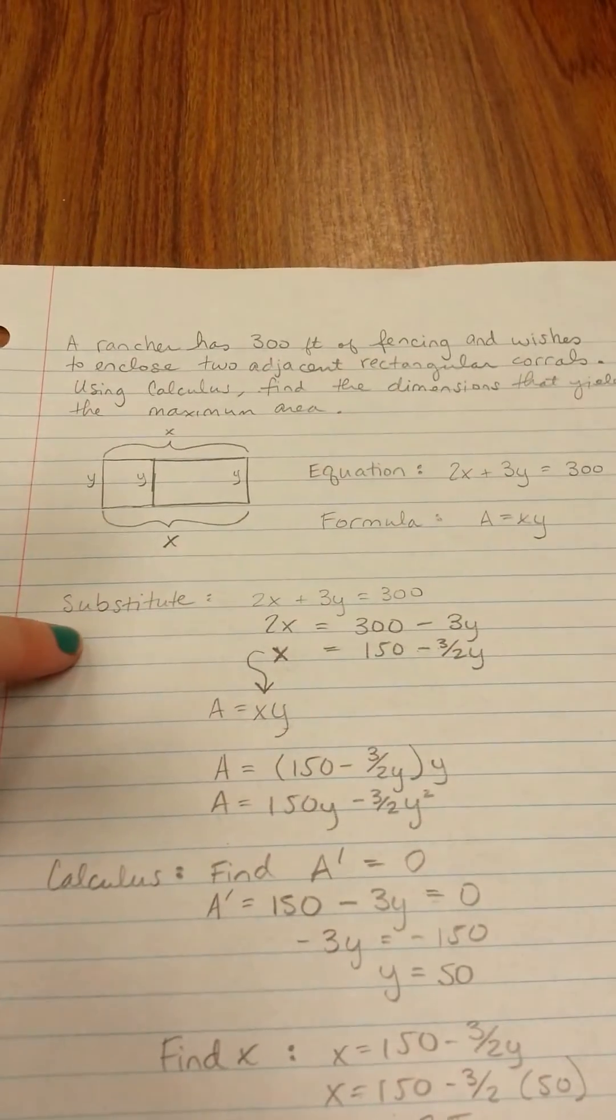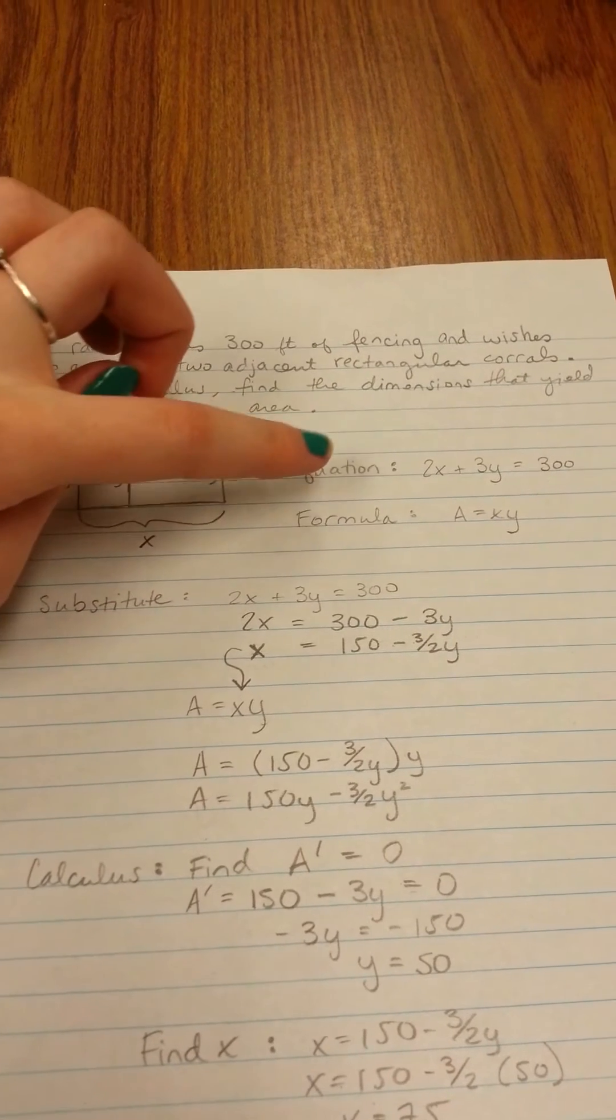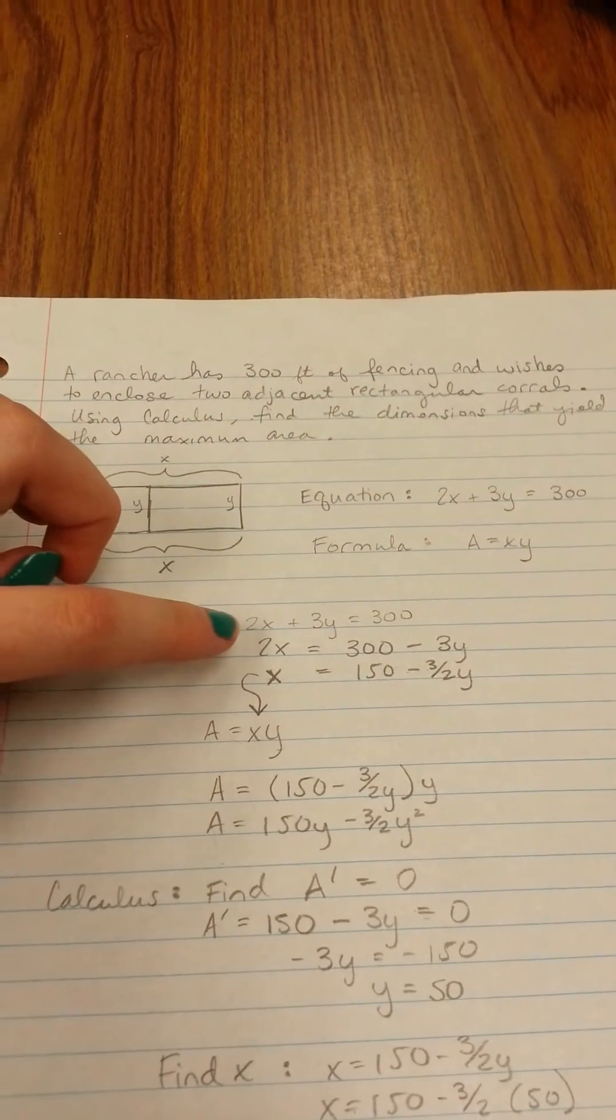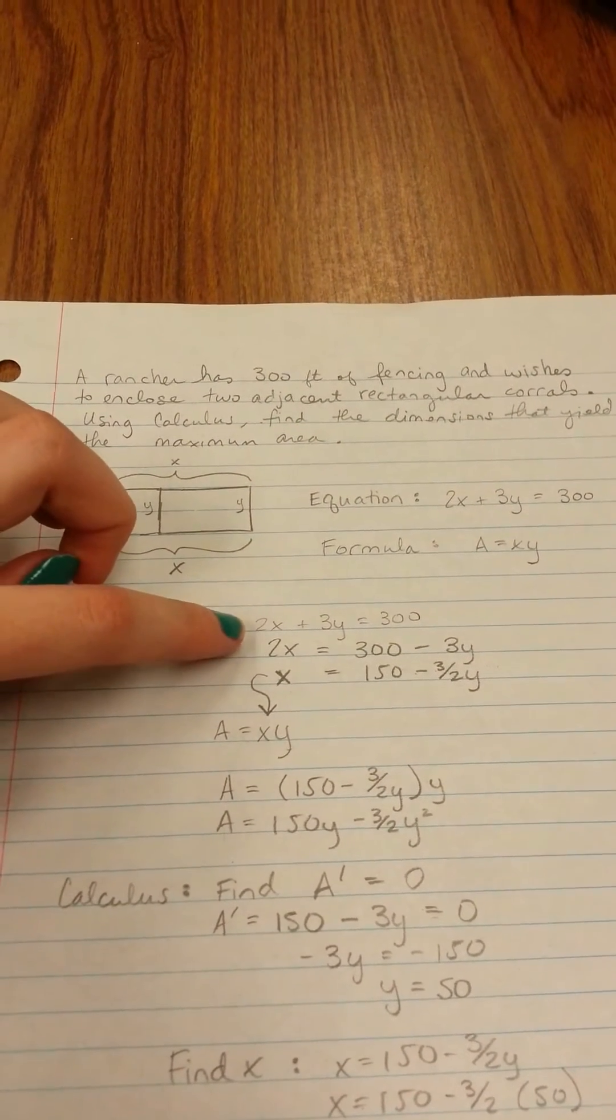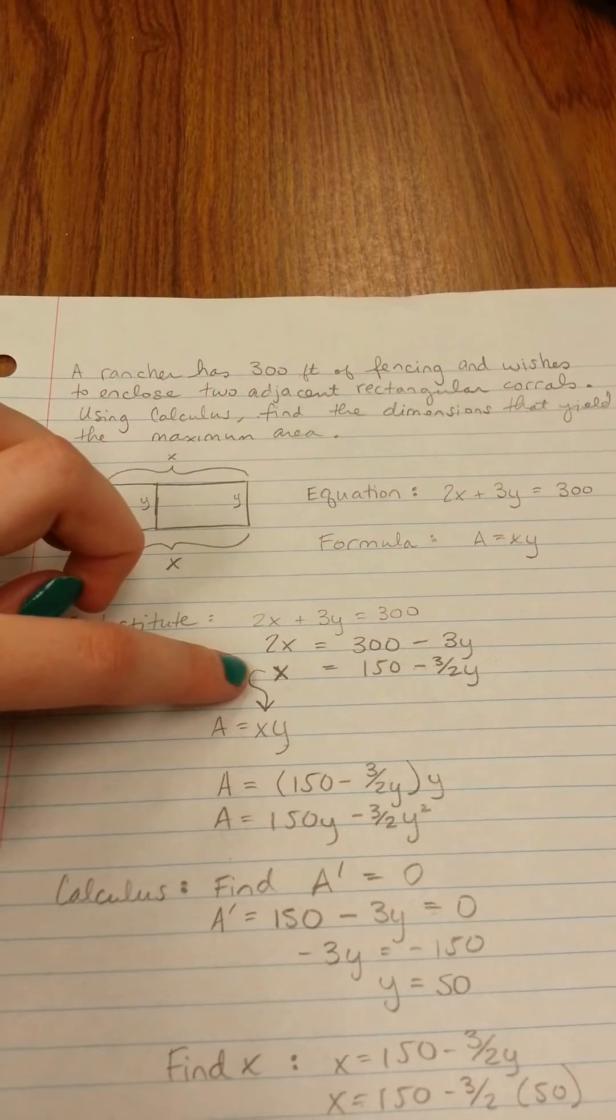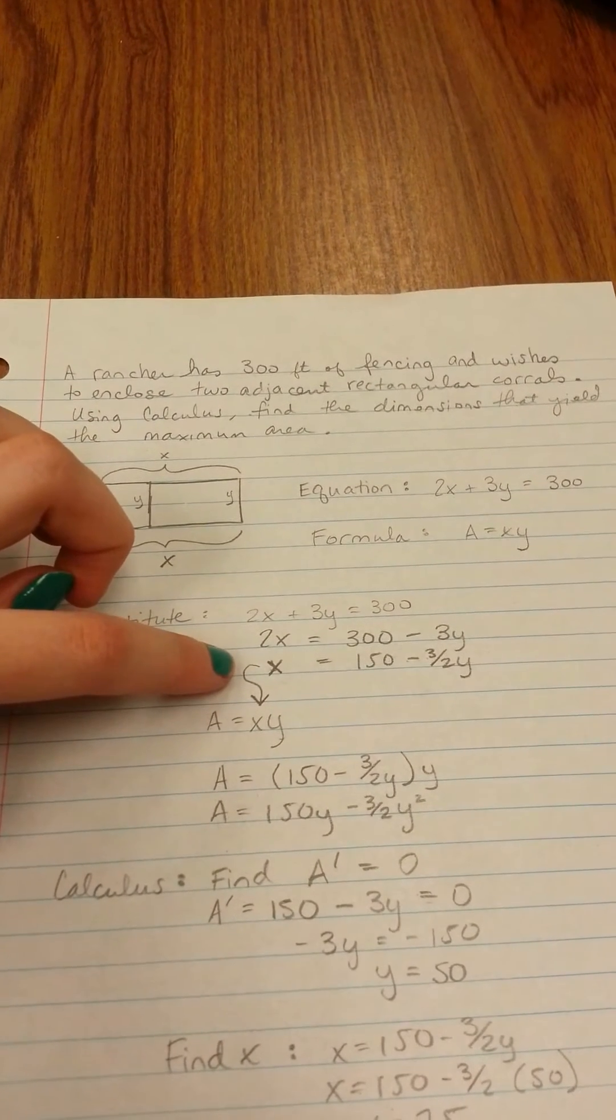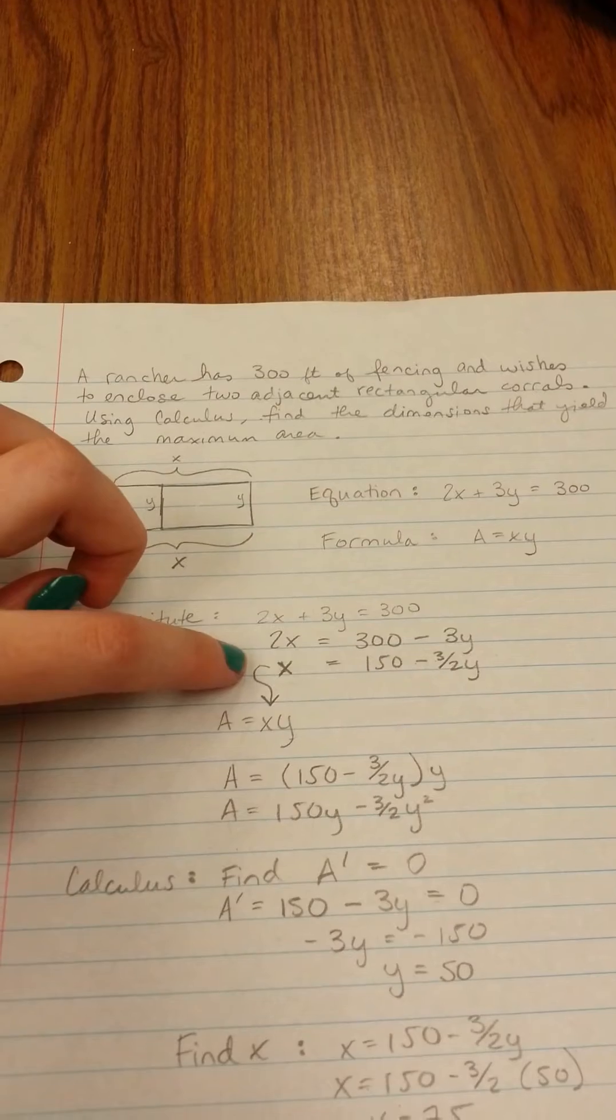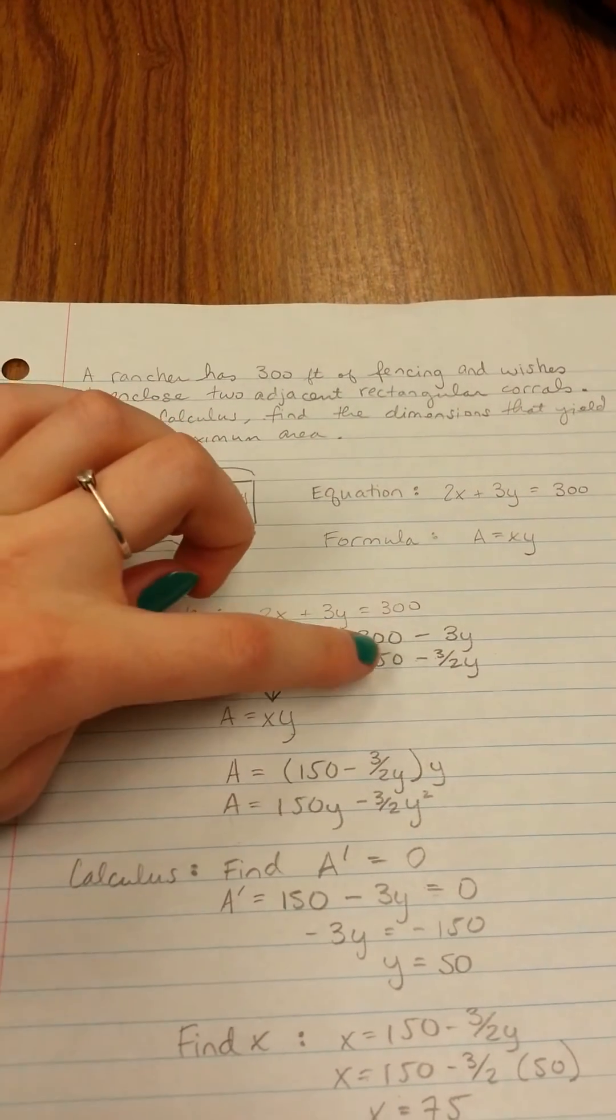The next step is to substitute. So you take the equation that you're given, 2X plus 3Y equals 300, and then solve down to get X. So we get X equals 150 minus three halves Y.